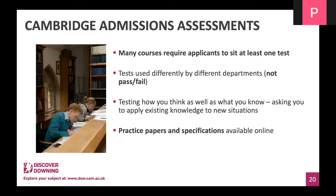There is an admissions assessment you need to sit for chemical engineering. You sit either the Engineering Admissions Assessment or the Natural Sciences Admissions Assessment, based on which route you've applied for. You choose which route you're applying via when you submit your UCAS application, and then sit the corresponding test. There are practice papers available online.